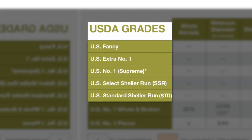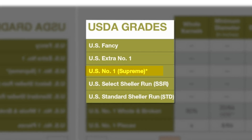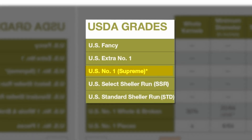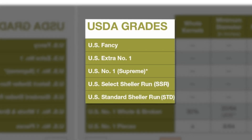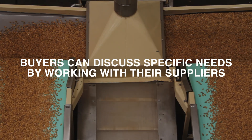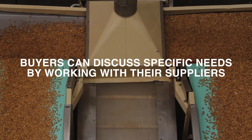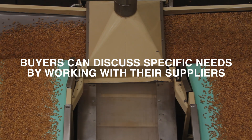The five grades for whole kernels are U.S. Fancy, U.S. Extra No. 1, U.S. No. 1 — often referred to as Supreme — U.S. Select Scheller Run, and U.S. Standard Scheller Run. Although these are the published USDA grades, buyers can discuss specific needs by working with their suppliers.